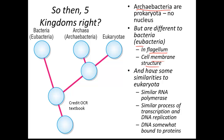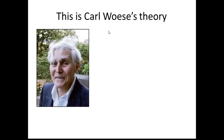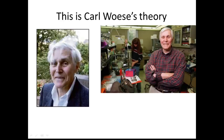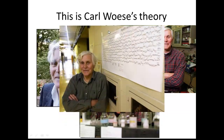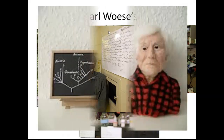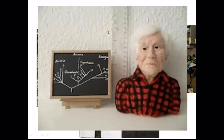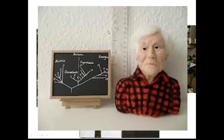So there is a big question as to whether archaebacteria belong in a single prokaryote kingdom. Carl Woese came up with the idea of three domains rather than five kingdoms. These three domains are the eubacteria, the archaebacteria, and the eukaryota.